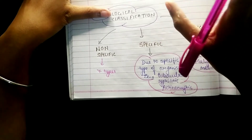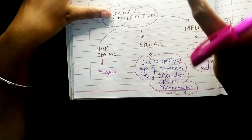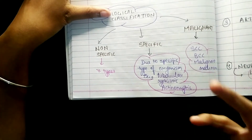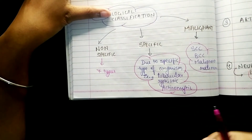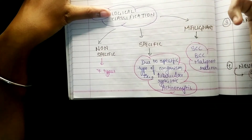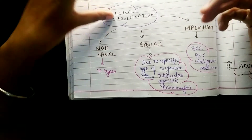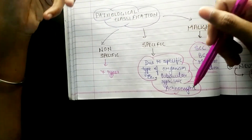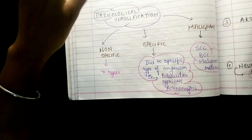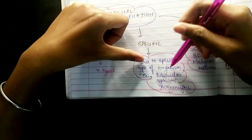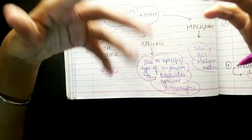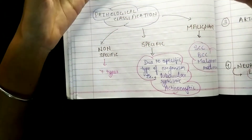Specific ulcer happens due to any type of specific organism. Here the types are: tubercular ulcer, syphilitic ulcer, and actinomycotic ulcer. Tubercular is due to Mycobacterium tuberculosis, syphilitic is due to the syphilis organism, and actinomycotic ulcer is due to Actinomyces israelii. These are organisms responsible for specific ulcers.